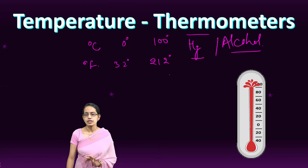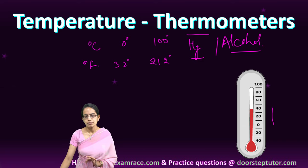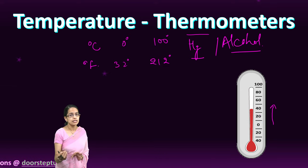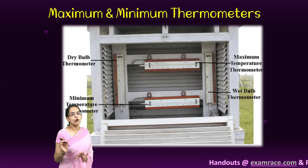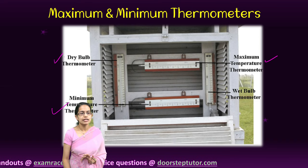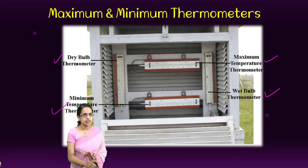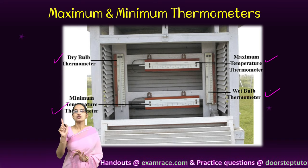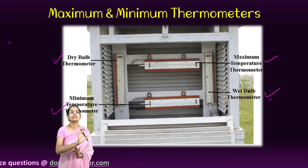Under a device called the Stevenson screen, we have various thermometers: a maximum temperature thermometer, a minimum temperature thermometer, and a dry bulb and wet bulb thermometer. The maximum and minimum thermometers are used to measure temperature, while the dry and wet bulb thermometers are used to measure humidity — do not confuse the two. All are kept in the shade of the Stevenson screen so that atmospheric disturbances do not cause sudden changes in the recordings.